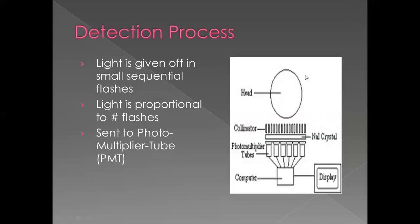Here is basically how the inside of the gamma camera looks. We have the collimator, then the sodium iodide crystal, and we have the PMT tubes attached to the crystal. Each PMT tube is very close to the next one — any gap between PMT tubes will cause artifacts in our image.